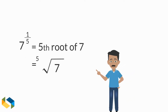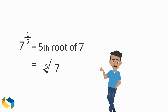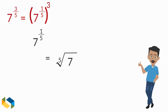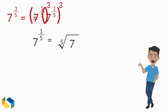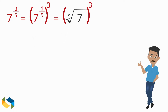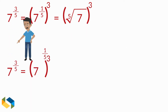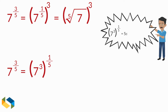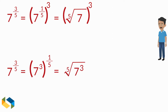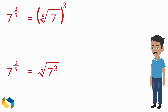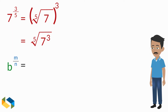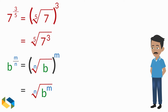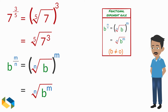This can also be written in radical form as seen here: the base goes here and the denominator becomes the index of the radical. So the answer of 7 raised to the power 3 over 5 is the fifth root of 7, the whole raised to power 3. By the power of product rule, this expression can also be written as 7 cubed raised to the power one-fifth, which is the fifth root of 7 cubed — the same result. In variable form: B raised to the power M over N is the Nth root of B, the whole raised to M, or the Nth root of B raised to M. We just derived the fractional exponent rule.